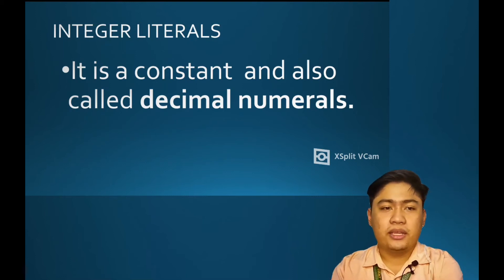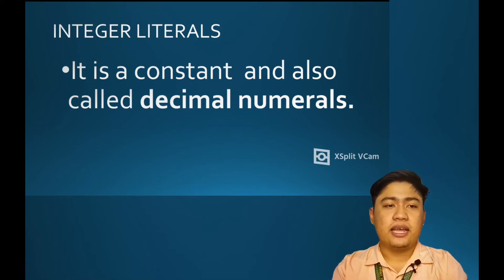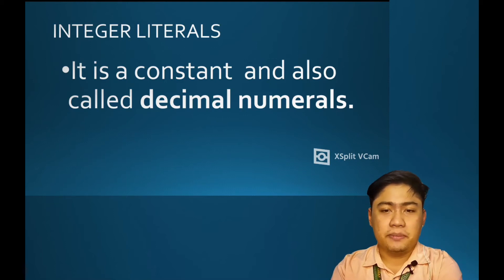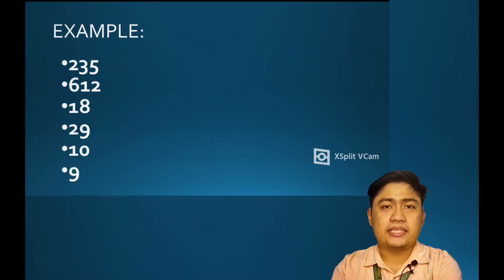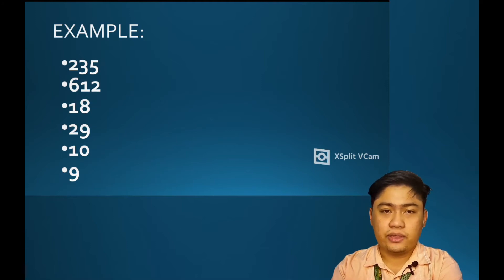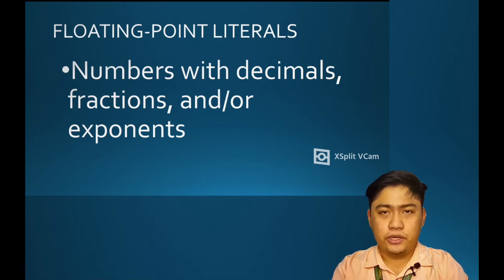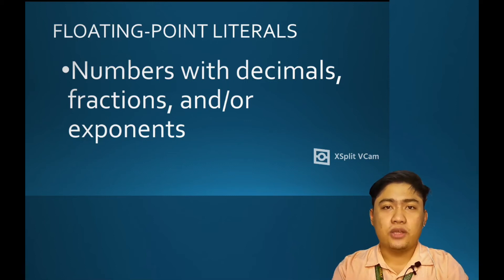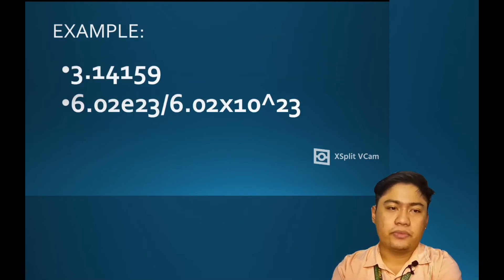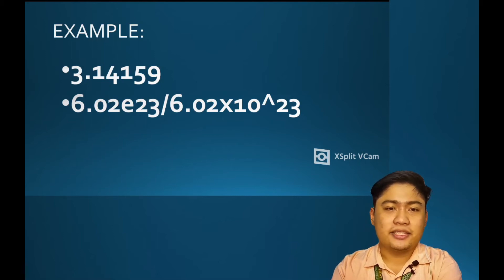Integer literals are constants also called decimal numerals. I have here examples of the different integer literals. Floating point literals are numbers with decimals, fractions, or exponents. These are the examples of the floating point literals.